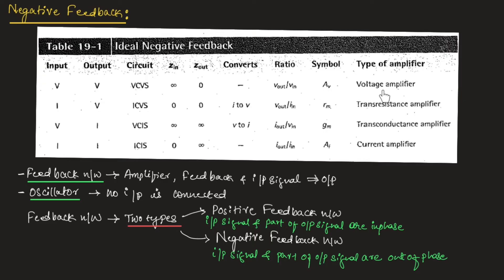These negative feedback networks with voltage input and voltage output are known as voltage amplifiers. If the input is current and the output is voltage, such networks are known as current controlled voltage source (CCVS) networks. Here, the input impedance is zero and output impedance is also zero. Since input is current and output is voltage, this circuit converts current to voltage. The overall gain is written as output voltage divided by input current, represented as Rm, and these are known as trans-resistance amplifiers.